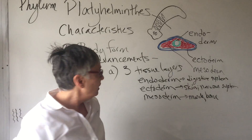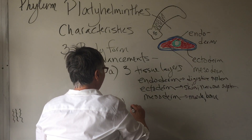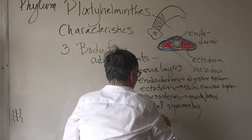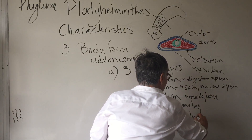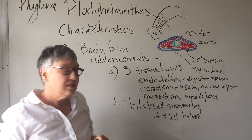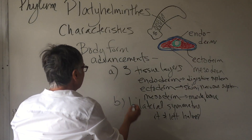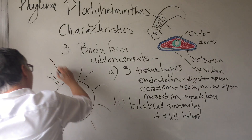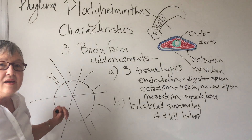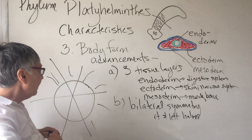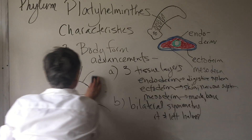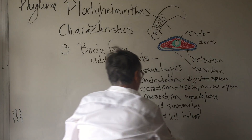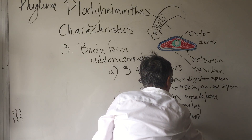A second advancement is that we now have bilateral symmetry — in other words, we have right and left halves. If we take the animal and cut it along this axis, this is different from radial symmetry. With radial symmetry, as in a jellyfish with tentacles coming out, we can cut along a number of different axes and always get symmetrical halves. But with bilateral symmetry there is again a right and left half — it's not a radial type of organization. In addition, we have a head area and a tail.